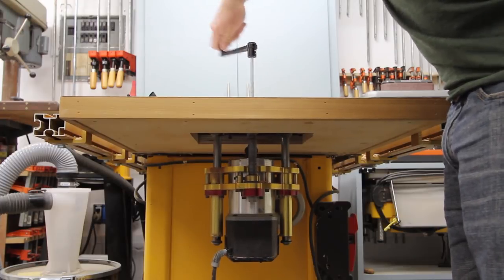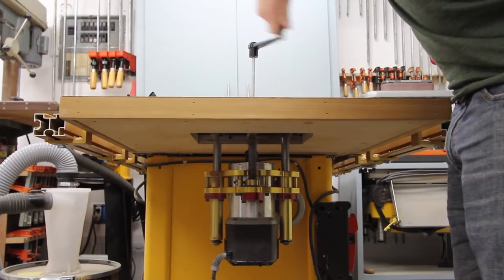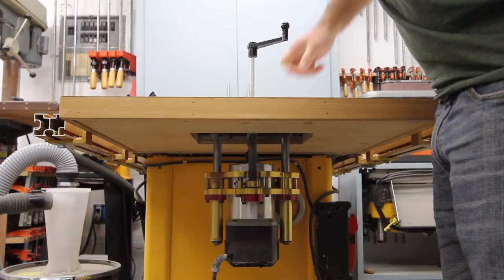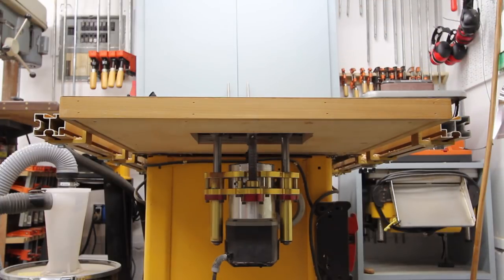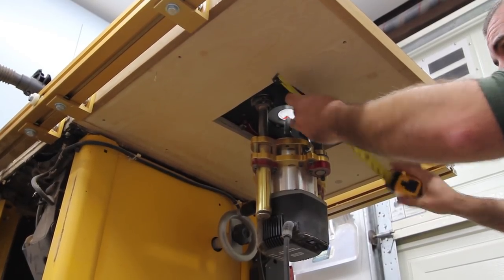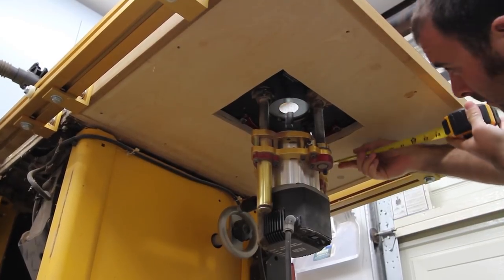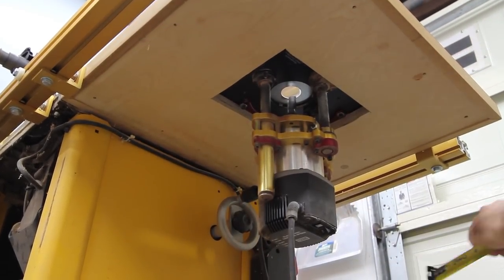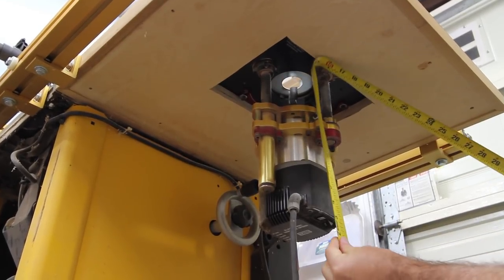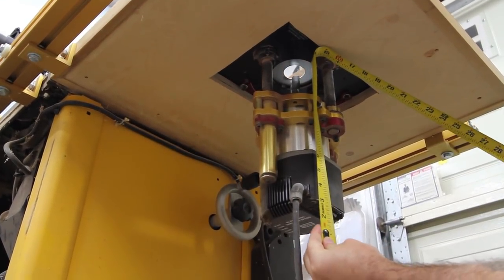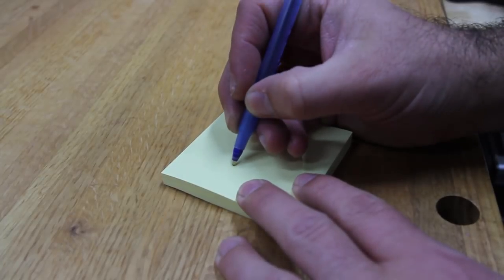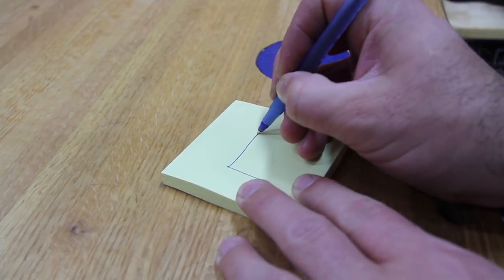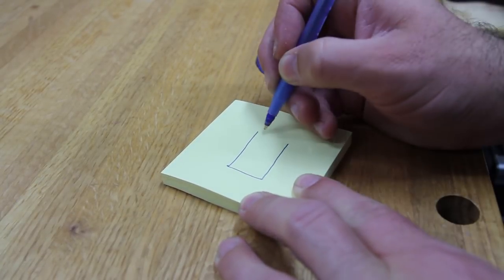So the first thing I did was lower the router all the way down to the bottom before I measured. I measured the router but I just rounded off to the nearest inch for my dimensions. I'm not getting too technical for the drawings on this project. It is just a plywood box so I think a post-it note will do just fine.